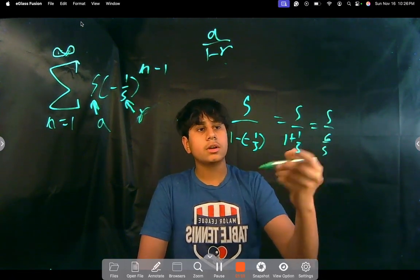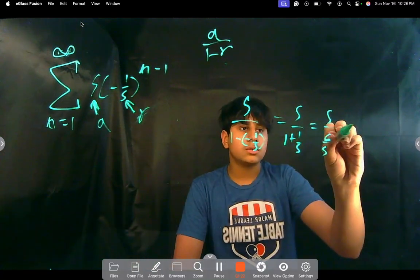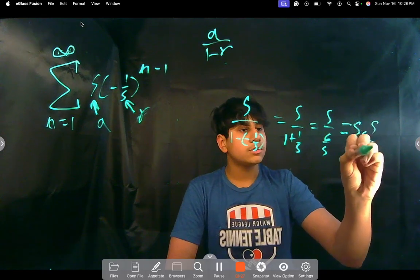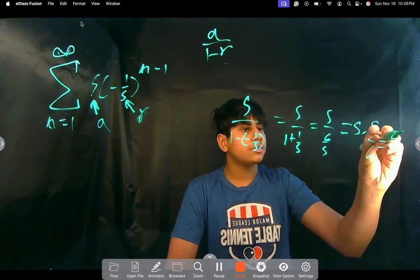5 over 6 over 5. Because 5 over 5 is 1, 6 over 5. Because 5 times the reciprocal of 6 over 5, which is 5 over 6, so that's 25 over 6.